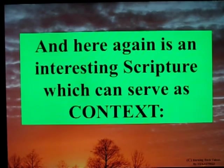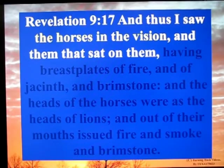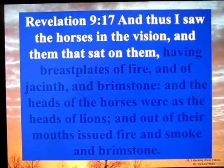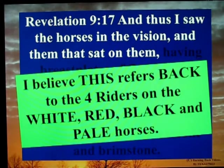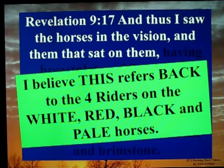And here again is an interesting scripture which can serve as context. Revelation 9:17: 'And thus I saw the horses in the vision and them that sat on them.' I believe this refers back to the four riders of the white, red, black, and pale horses.